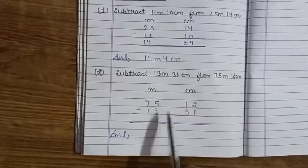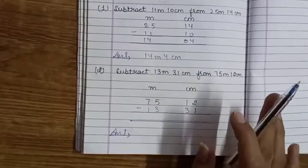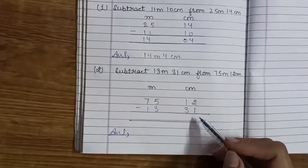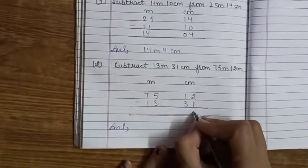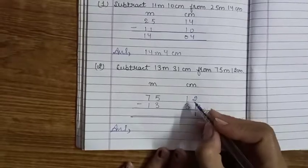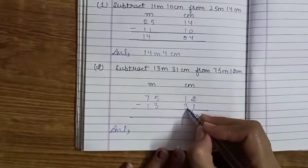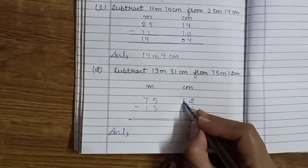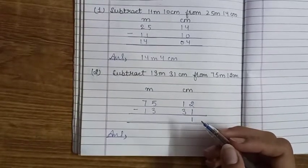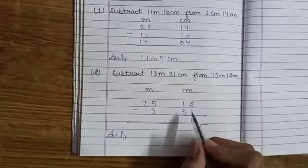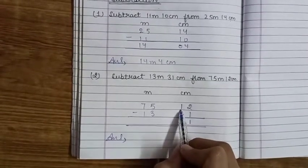Aap isko simply minus karenge - 2 minus 1, 1 minus 3. Ye possible nahi hai ki aapki jisko aapko di gayi hai woh chhoti hai aur jo minus karne ke liye bola gaya hai woh aapki badi hai. So kya karte hain ki hum apni left follow digit mein se borrow le lete hain.